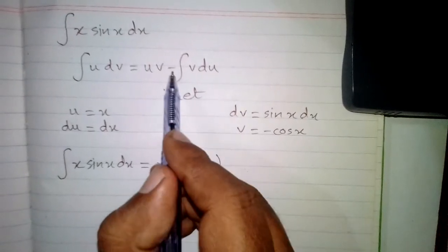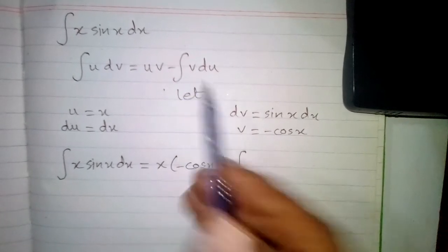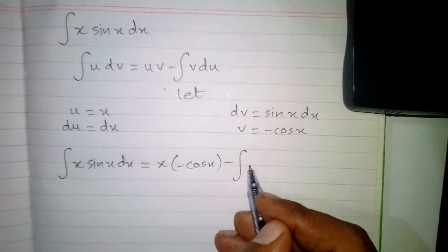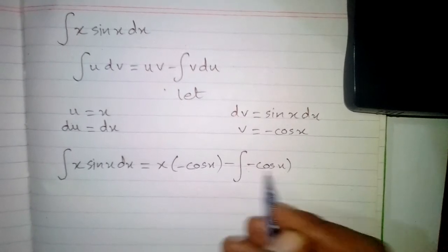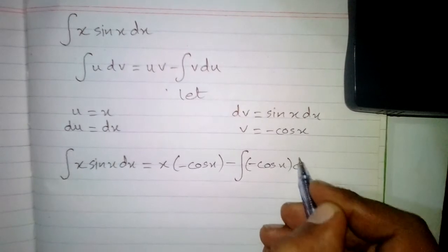Then minus integral of v du. The value of v is minus cos x and du equals dx, so we will write dx over here.